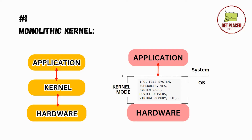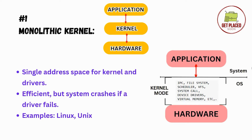Now let's look at this design more deeply. The application and hardware remain the same. Looking at the kernel part, there are two modes — user mode and kernel mode. In kernel mode, both user and kernel services like IPC, file system, device drivers, memory, and system calls are all run only in kernel mode. Every single thing is arranged in the same memory space — device drivers and all kernel components are present in the same space and in the same mode. This is single address space for kernel and drivers.